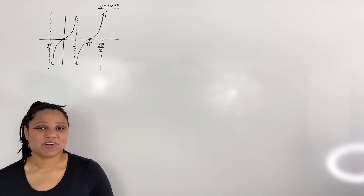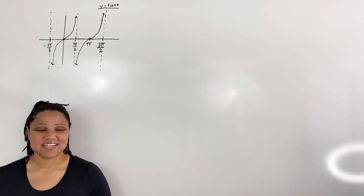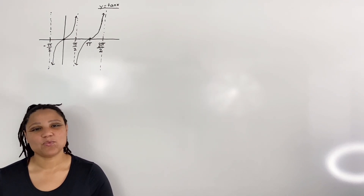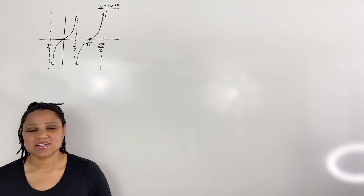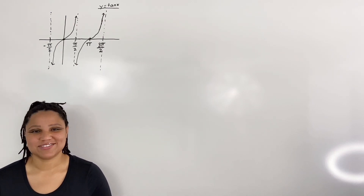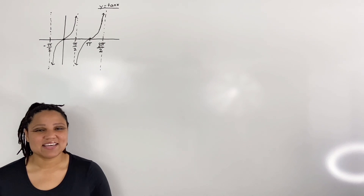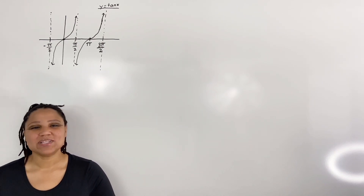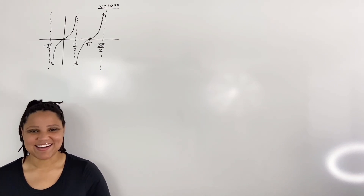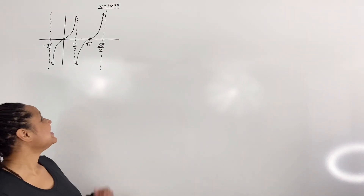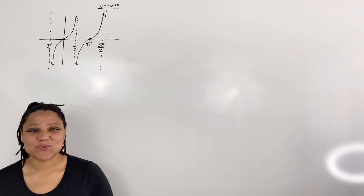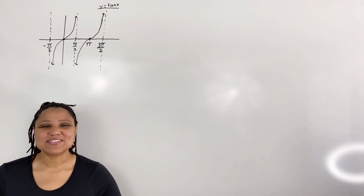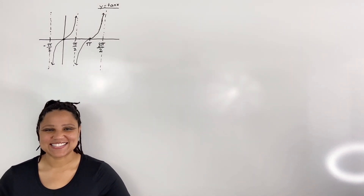However, in order for a function to have an inverse it must be one-to-one. In other words, the graph must pass the horizontal line test. This means if I draw any horizontal line to the graph it will only intersect the graph one time. Clearly tangent is not one-to-one — it fails the horizontal line test.